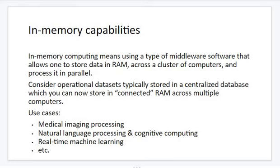RAM can be used as a cache and in-memory storage. A spinning hard drive can also be used as RAM or in-memory. RAM used as cache and in-memory can be up to 5,000 times faster than a spinning hard drive.